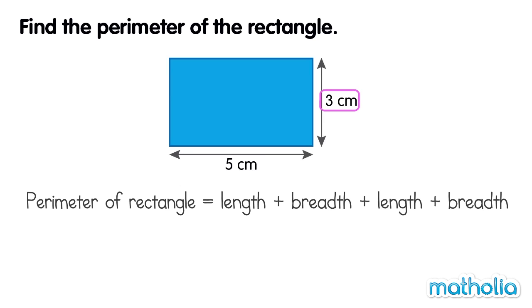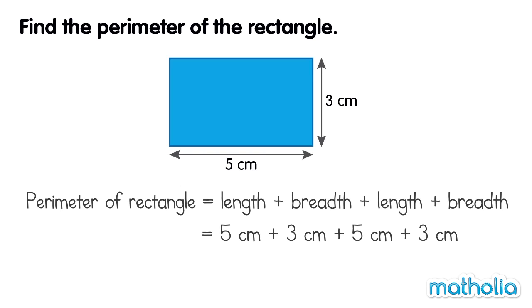So the perimeter is equal to 5 cm plus 3 cm plus 5 cm plus 3 cm, which is equal to 16 cm. So the perimeter of the rectangle is 16 cm.